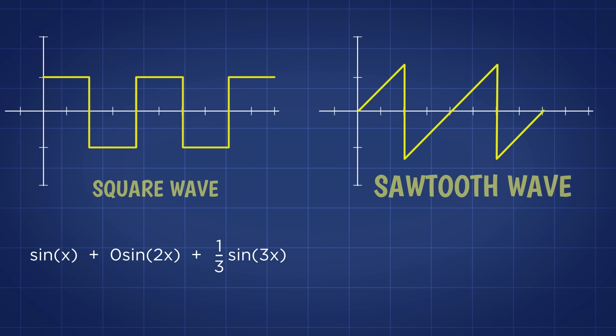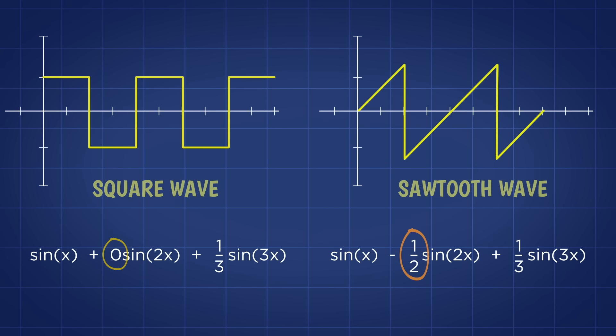While the first few terms of the sawtooth wave are sine x minus half sine 2x plus one-third sine 3x. Simply by knowing the amplitude of that second term, the program would know which was which.